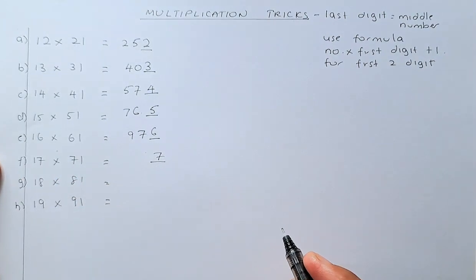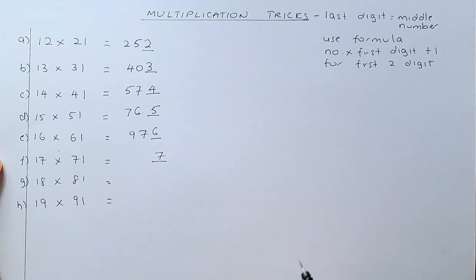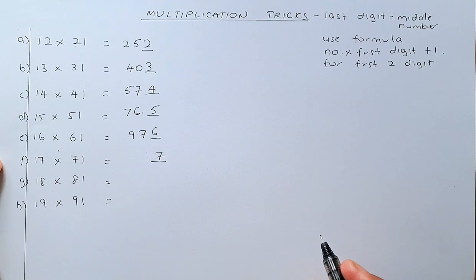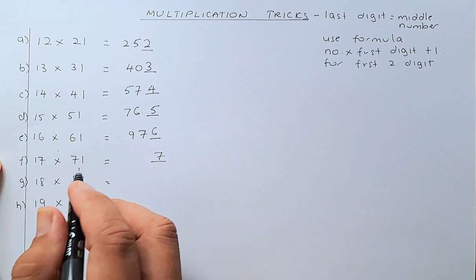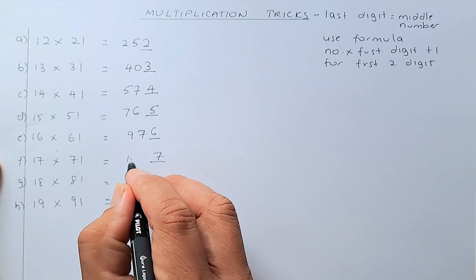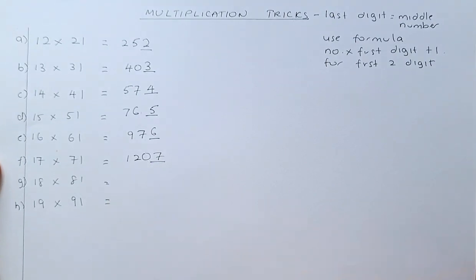And then, you are going to multiply 17 by 7. If you are a good mathematician, so 17 times 7 is 119. 119 plus 1 is 120. So, the answer is 1207.